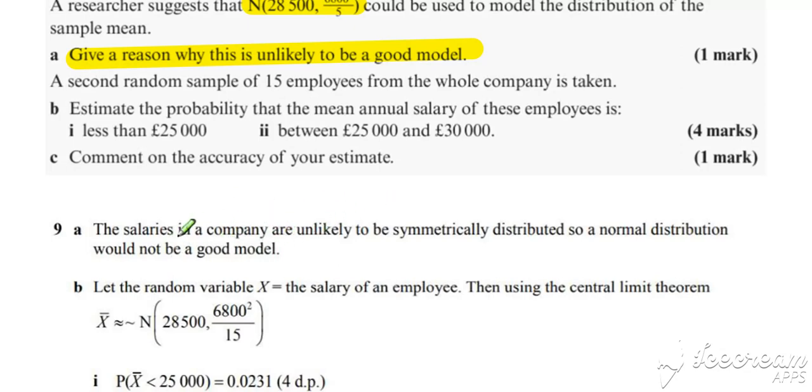The other thing to consider is whether the original distribution itself is reasonably normal. And I think you could argue the case that generally salaries at a company are unlikely to be symmetrical. So a normal distribution would not be a good model. I think for salaries, it's normal that there's a few sort of larger salaries for the top end management, and then the other salaries are at the lower end and more sort of consistent around the lower amount.